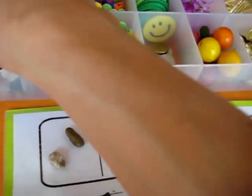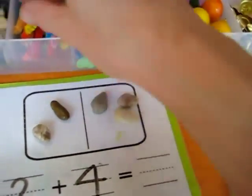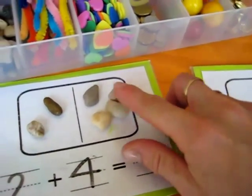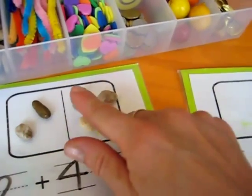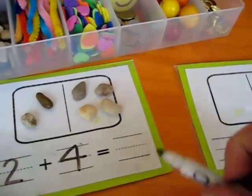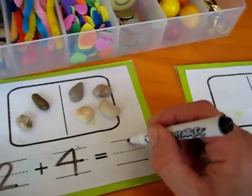2 plus 4, 1, 2, 3, 4. So they count them, 1, 2, 3, 4, 5, 6. 2 plus 4 equals 6. And they write number 6.